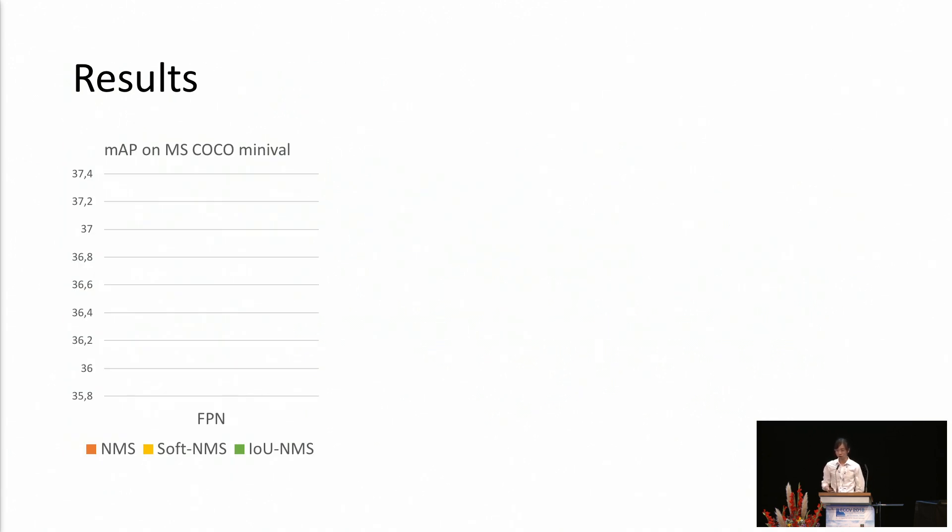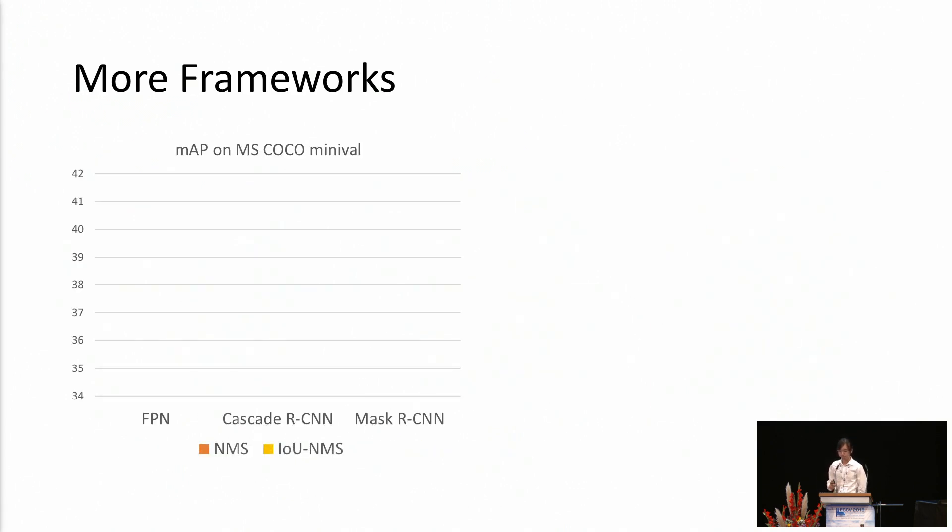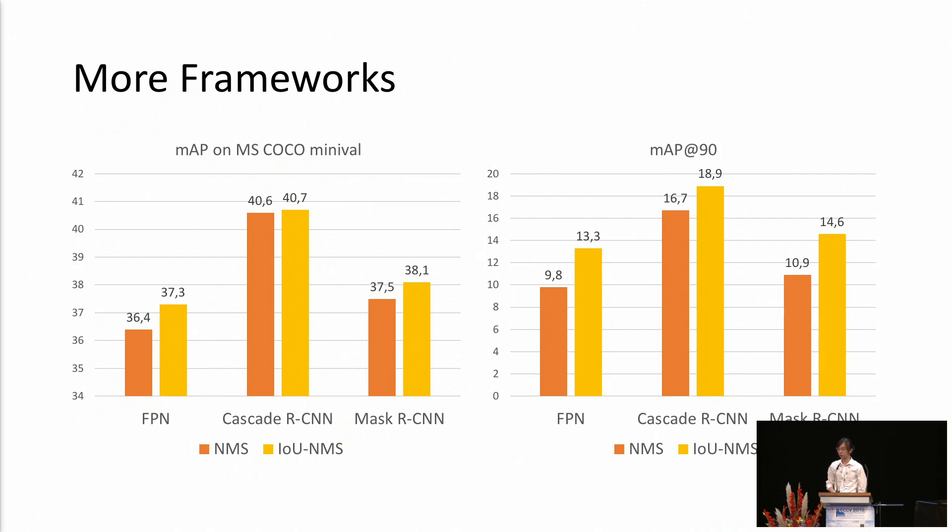Here comes the result. We compare our results on the MS COCO dataset with the traditional NMS and a softer NMS alternative. More importantly, when we look at the MAP metrics with high IOU threshold, essentially, we impose a stronger requirement for the localization confidence. We show a greater gap with other methods. Most importantly, we find that our algorithm can be applied to multiple frameworks, not only FPN. We have tried this on top of the Cascade R-CNN and Mask R-CNN, which are both state-of-the-art object detectors. And we have consistent improvement on the overall AP as well as the AP metrics with high IOU threshold.